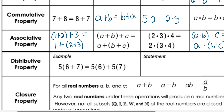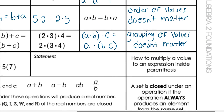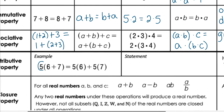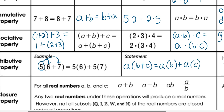Our next property is called the distributive property. The general idea is how to multiply a value to an expression inside parentheses. We can take a value outside the parentheses and multiply it by the first number inside, then take that same value and multiply it by the second number inside, and get the same outcome. The general statement looks like: a times (b + c) can be split into a times b plus a times c.